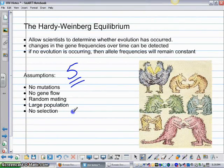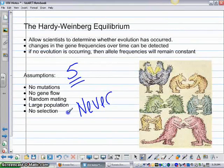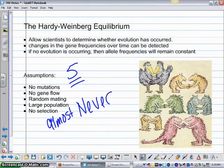That the population is infinitely large and that there's no selection on the trait that we're looking at. So you can see that this is a never going to happen type situation or an almost never at the very most.